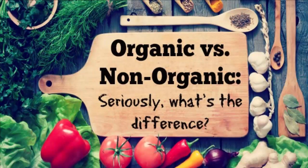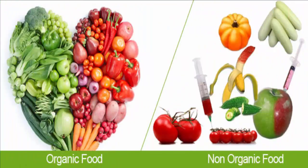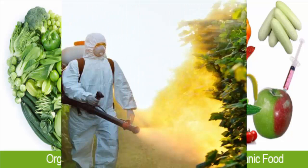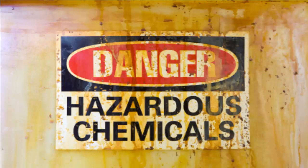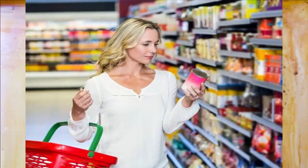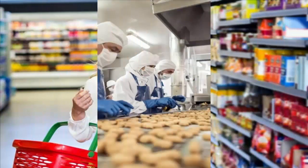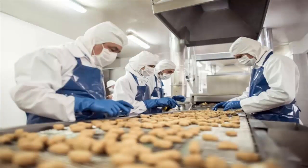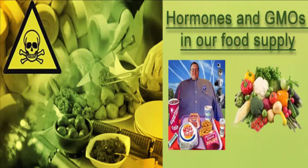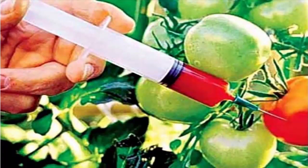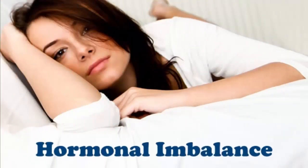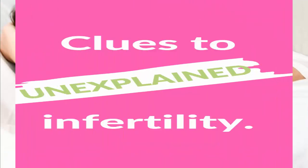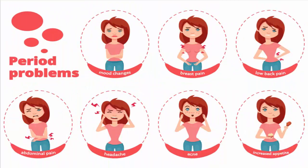Let's see what damages conventional or inorganic food can cause. As we discussed, inorganic or conventional food uses a lot of chemicals. If we consume this food over a long period, the hormones injected to ripen fruits and vegetables quickly or make them appear larger can cause hormonal imbalances in our body, such as infertility or chronic menstruation problems.